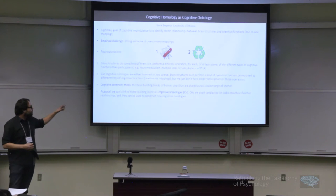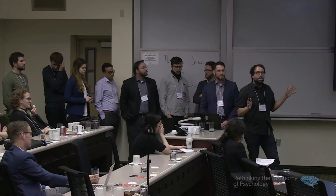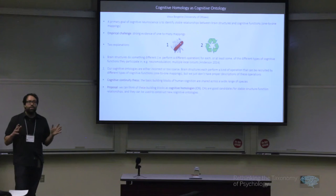Here there could be a possibility of one-to-one mappings, but the problem is that we just don't have proper descriptions for those operations. The start of our project is this assumption—what I call the cognitive continuity thesis: the basic building blocks of human cognition are shared across a wide range of species. I propose we should think of these building blocks as cognitive homologies. A cognitive homology is the operations of homologous structures, and I'm going to argue that cognitive homologies are good candidates for stable structure-functional relationships and can be used to construct new cognitive ontology. You can think of an alternative title as carving up the mind at its homologous joints.